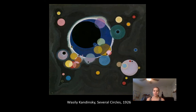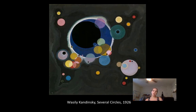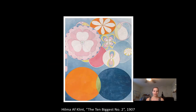Kandinsky was a non-representational artist — this dates to 1926 — and for a long time he's considered the first non-representational artist, though that is debated. In this image he's using large and small circles of all different colors, which creates variety, and the shape itself — the circles — creates the unity.